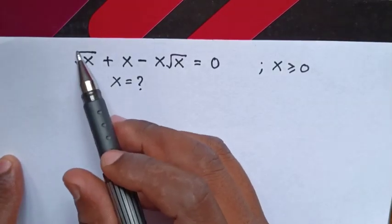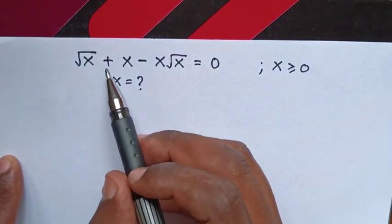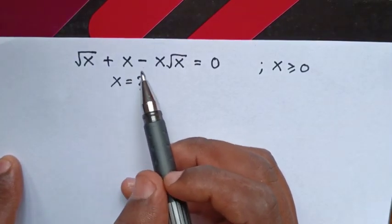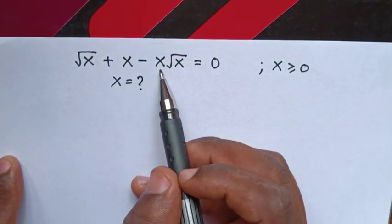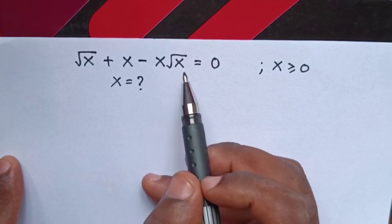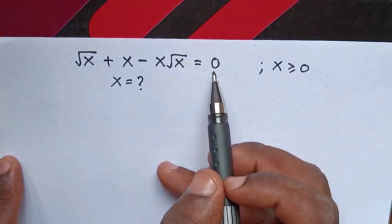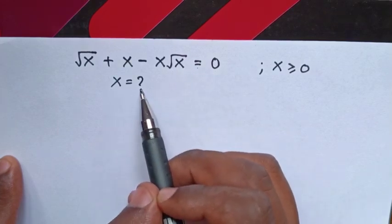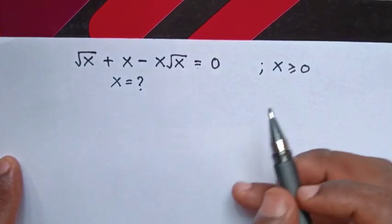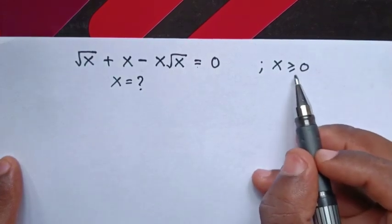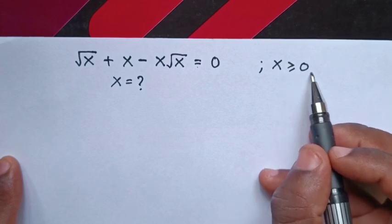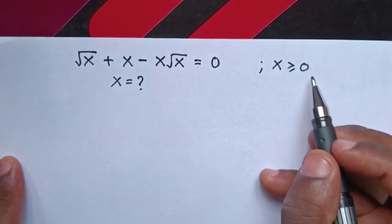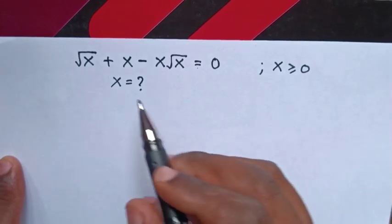How to solve square root of x plus x minus x times square root of x equals 0, to find the value of x such that x is greater than or equal to 0.